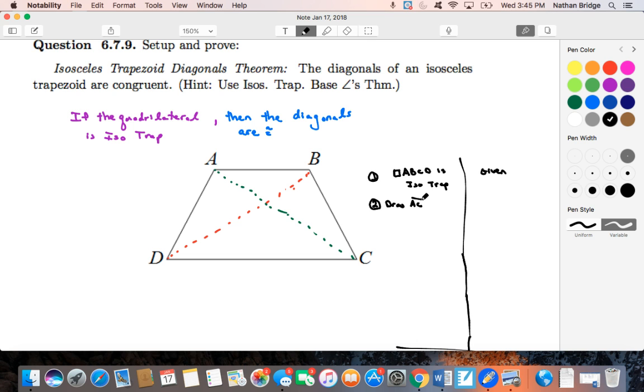and B, D. That is, we're going to add those auxiliary lines, and we can do that just by the definition of a line. So we can draw a line through any two points. Okay,